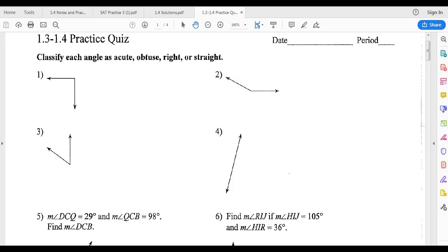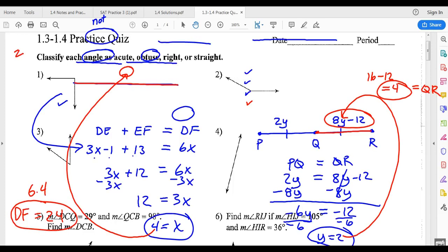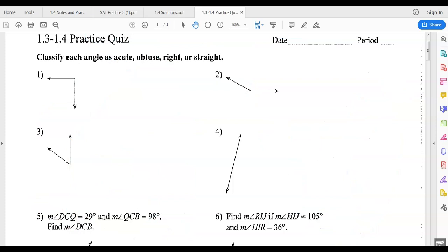Alright. So now we're moving on to 1-3-1-4 practice quiz. And first part, classify. We either have to say acute, obtuse, right, or straight. So this angle right here appears to be right, which means it's 90 degrees. Now, if you are bigger than 90 degrees, like number 2, you're considered an obtuse angle. That's greater than 90. Number 3 looks less than 90. So that would be acute. And number 4 is a straight line. So we say that it is a straight angle. So you're just naming there.